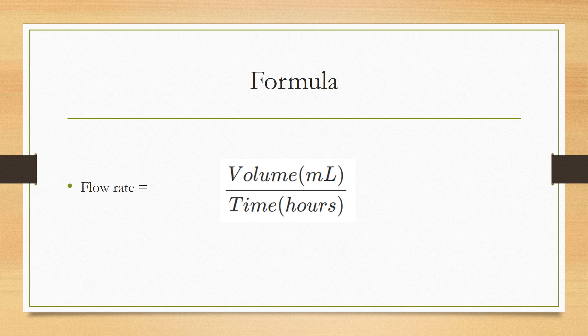This is the flow rate formula. Flow rate is equal to volume in milliliters over time in hours. These units are extremely important. Volume is always in milliliters, and time always in hours.